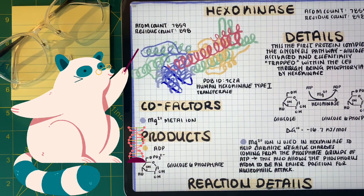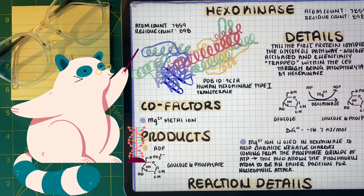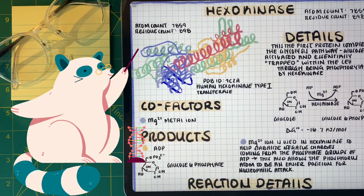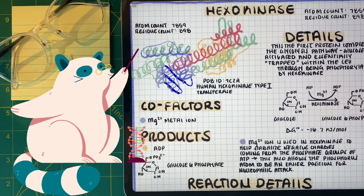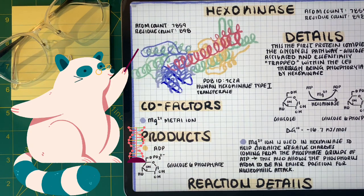The cofactor is one or more inorganic ions that work with the enzyme to help with the reaction. So for example, magnesium here in hexokinase helps stabilize the negative charge coming from the phosphoro groups in the ATP and glucose 6-phosphate.